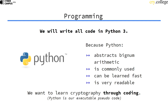We use Python for a number of reasons, but mainly because it abstracts away Bignum arithmetic. If you work in another programming language, you have to write your own code for large numbers. In cryptography, we use a lot of large numbers, so Python just abstracts that away and we don't have to deal with it.